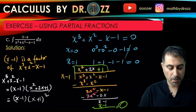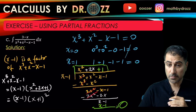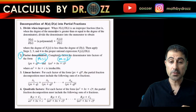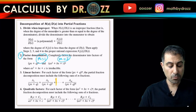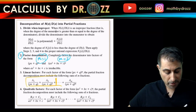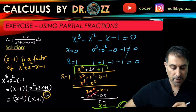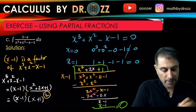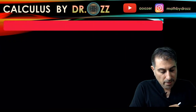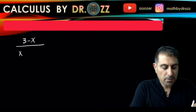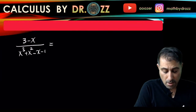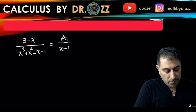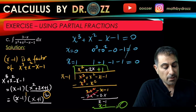Now that we have the factors — one linear factor (x minus one) with power one, and another linear factor (x plus one) with power two — we apply the partial fractions strategy. Whenever a factor has a power, we keep all powers up to that order. So for the factor (x plus one) squared, we'll have two fractions corresponding to it. Let me write the partial fraction decomposition for (3 minus x) divided by (x cubed plus x squared minus x minus one).